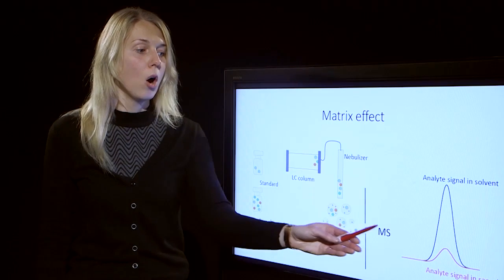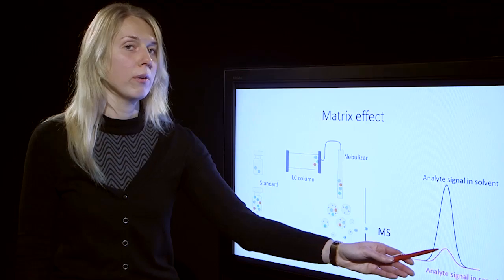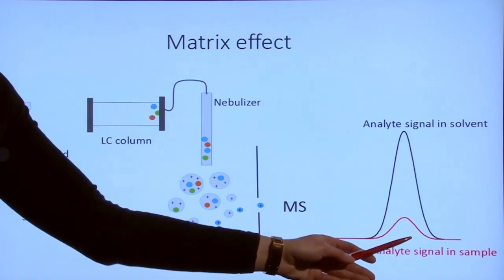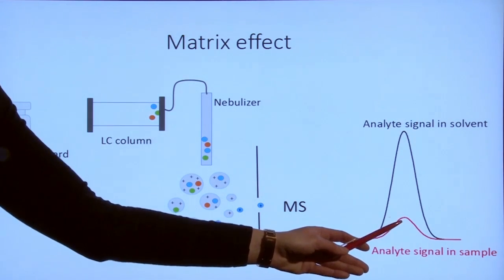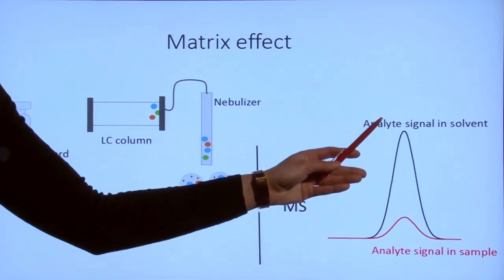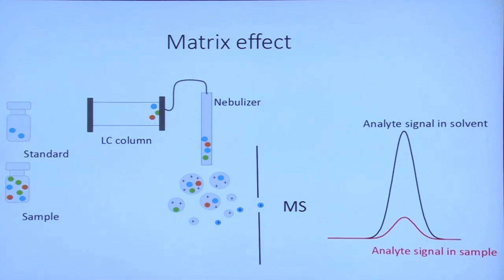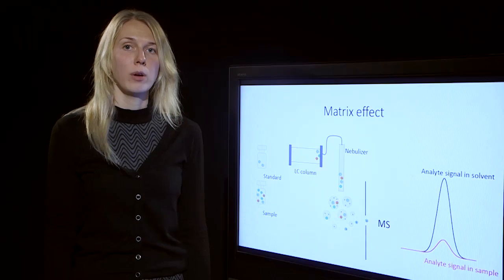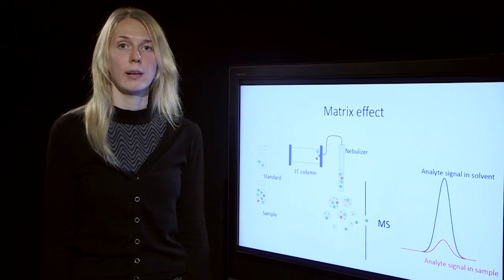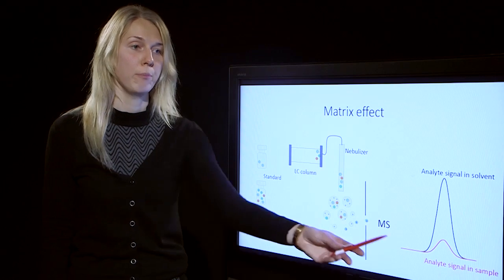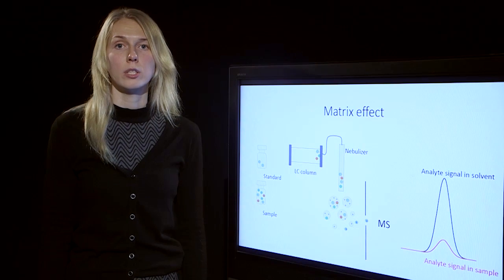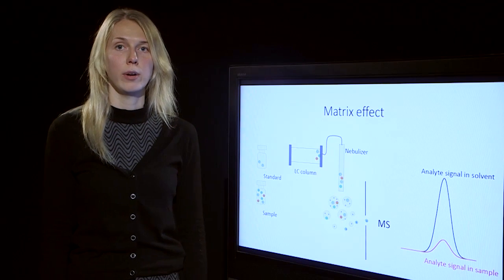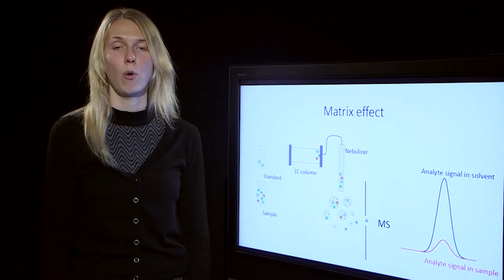Therefore, on the chromatogram we will observe a peak that is smaller for the sample than for the analyte, even though the concentrations are the same. This means that we obtain significantly underestimated results for the sample, and this may be a very serious bias for our analysis.